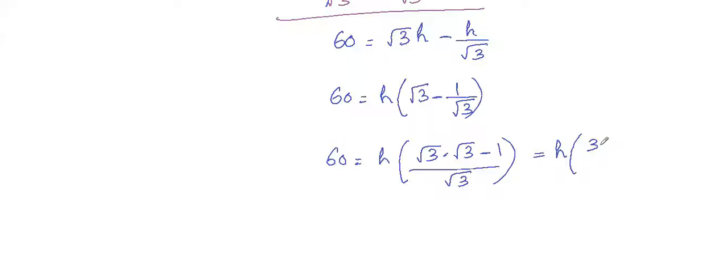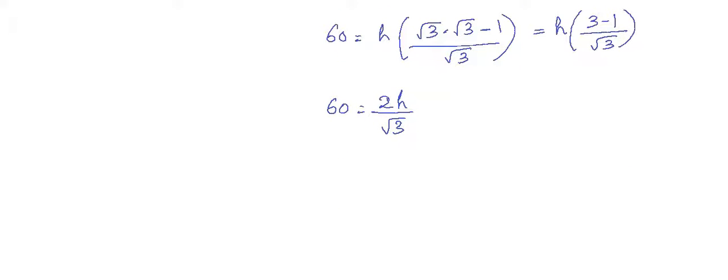So 60 equals h into 2 by root 3, or 2h divided by root 3. Now find the value of h. Just move that root 3 to the other side, so we'll get 60 root 3 equals 2h. And divide both sides by 2, we'll get h equals 60 root 3 divided by 2.